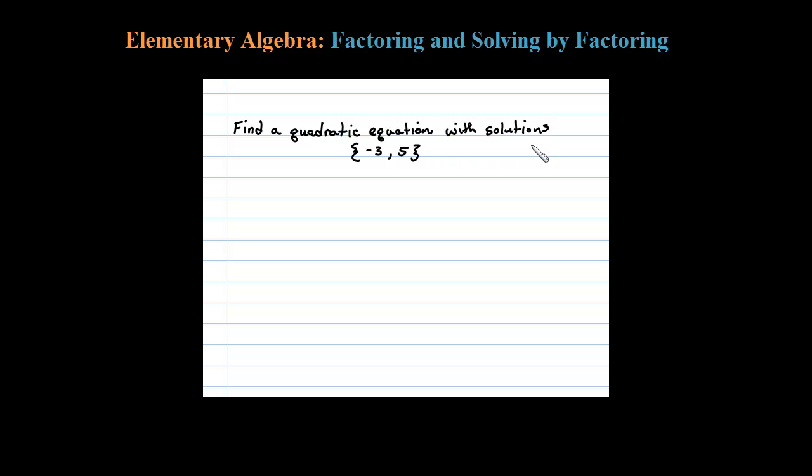To find a quadratic equation with solutions -3 and 5, I'm going to use the process of solving by factoring backwards. So here are my two solutions: x could be equal to -3 or x could be equal to 5.